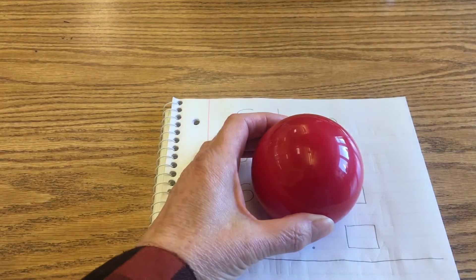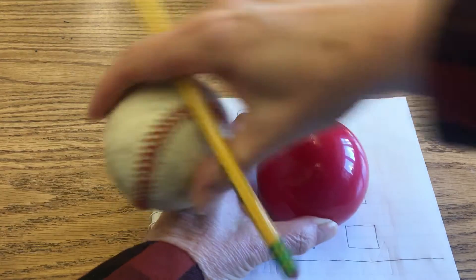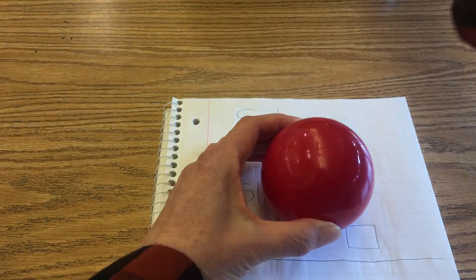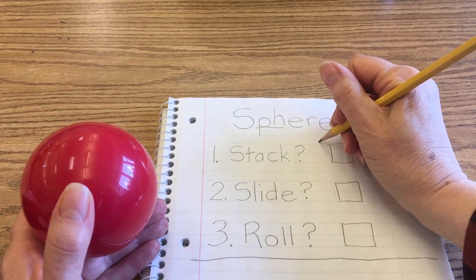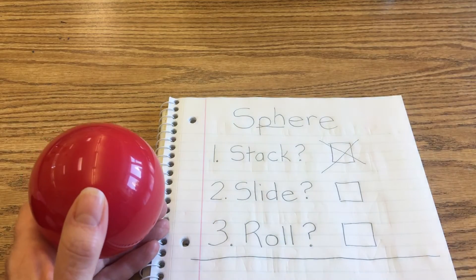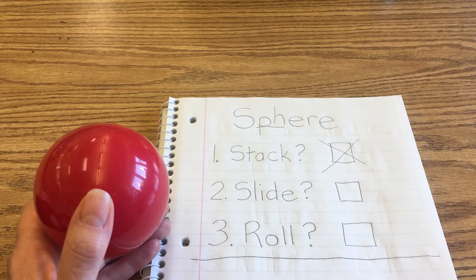And can I stack another one on top of it? There's a baseball. No. It doesn't want to stay on there. And so it does not. So I'm going to cross that off because that's not going to work. Big cross through there. That's a no.